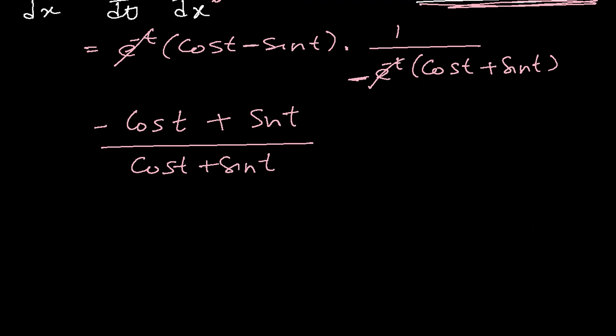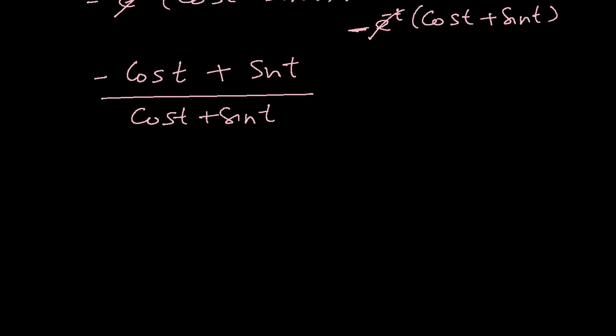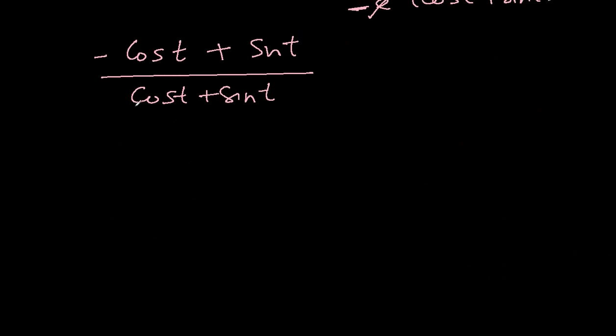So what format do they want? tan(t - π/4). That means we have to convert this to tan. Let's divide each element by cos(t). And why cos(t)? Because sin over cos is tan and cos over cos is 1. So it will change it to -1 + tan(t) over 1 + tan(t).